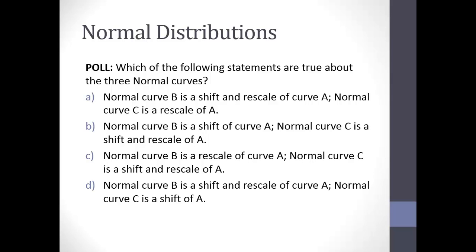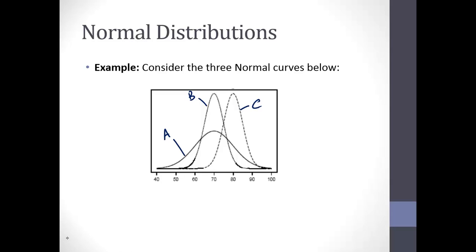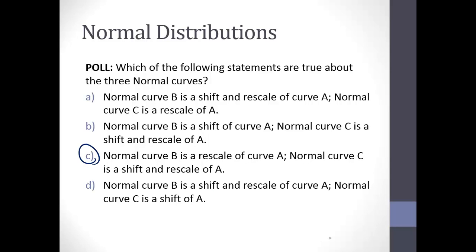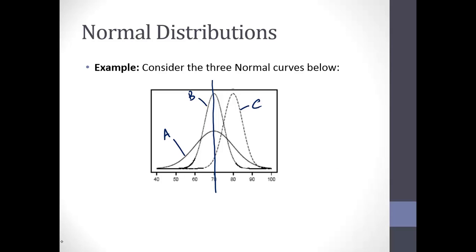We had complete consensus — choice C is correct. B re-scales curve A: notice B and A have the same center, so going from A to B I haven't done any shifting — I've just squished it in. Then to go from B to C, normal curve C has the same shape as B but I'm just moving it over — so that's both re-scaling and shifting. Very good, you all got that exactly correct.